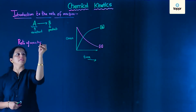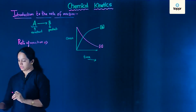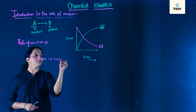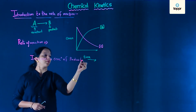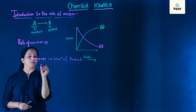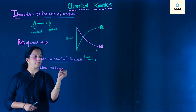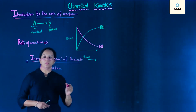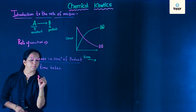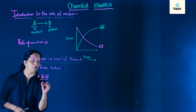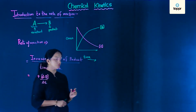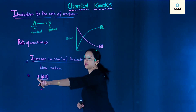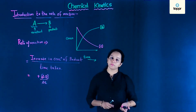Rate of reaction is equal to increase in concentration of product upon time taken. In this case our product is B, so we write that it is equal to plus delta B upon delta T.